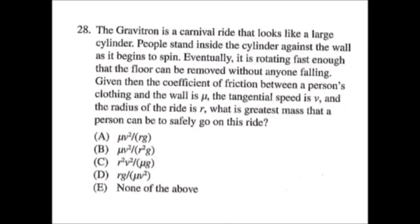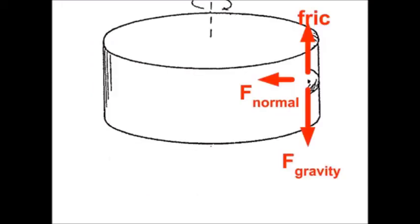The Gravitron, a carnival ride, looks like a large washing machine, spin cycle type thing. People stand in the cylinder and it spins, and then the floor is removed and they don't fall because that would be a lawsuit. Given the coefficient of friction and the person's clothing, mu, tangential velocity v, radius r, what on earth are they talking about? They're talking about this and they're talking about that.